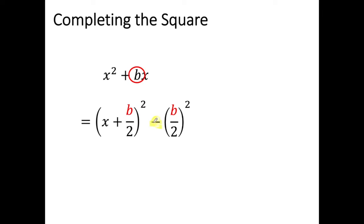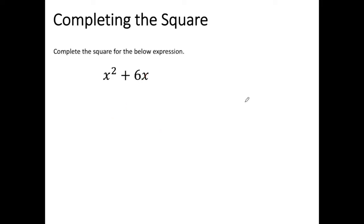The subtraction when we take away our b divided by 2 squared is always going to be a subtraction, whereas the operation sign in our bracket will vary depending on what is in the original expression — it might be adding or subtracting, taking the form based on the original expression. Let's have a look at a couple of examples. In the first example, we want to complete the square for the expression x squared plus 6x.